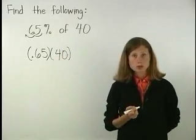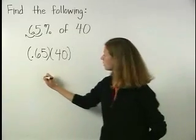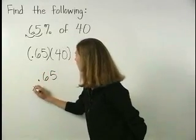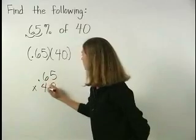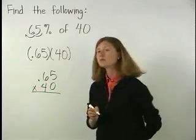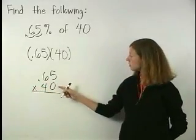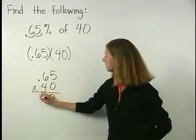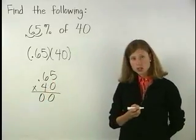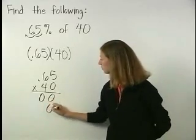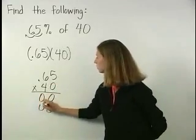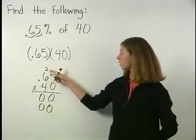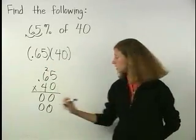Next, line up the numbers to multiply. So we have .65 times 40. Multiplying 0 times 5 is 0 and 0 times 6 is 0. Starting a new row, 4 times 5 is 20 and 4 times 6 is 24 plus 2 is 26.